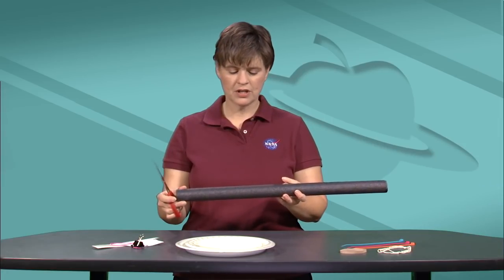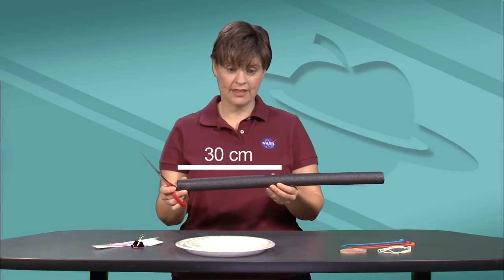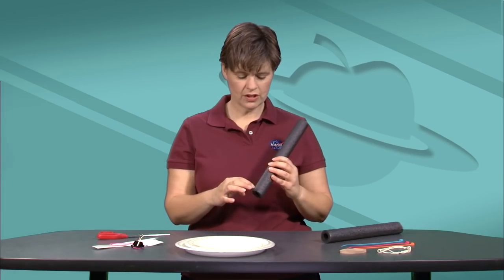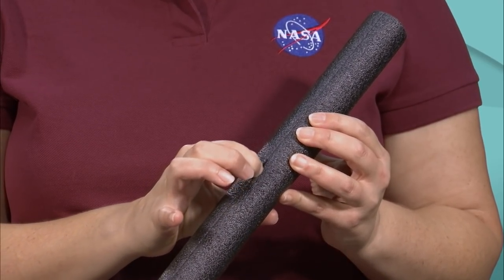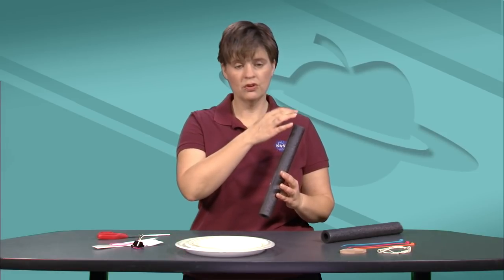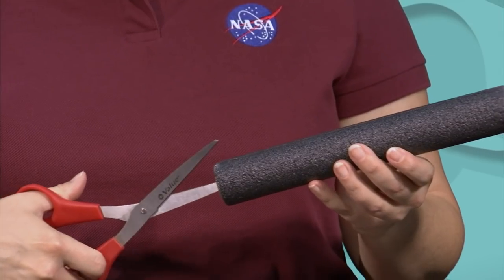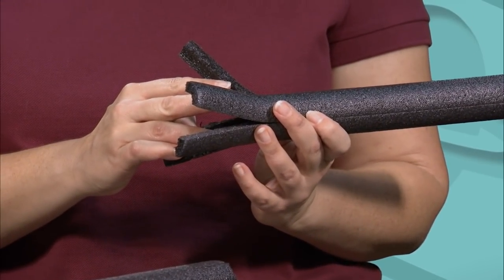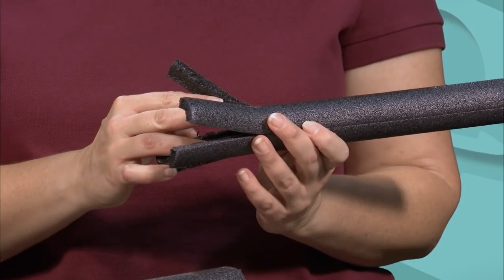To get started, measure out about a 30 centimeter length and then just give it a cut. You'll notice there is a pre-scored cut along one edge. It runs the full length of that pipe insulation. Cut along that about eight centimeters. Make three additional cuts at a spacing of 90 degrees around the circumference. You'll end up with this nice flared bottom of your rocket.